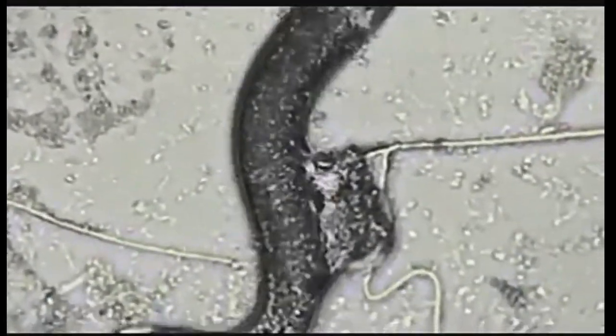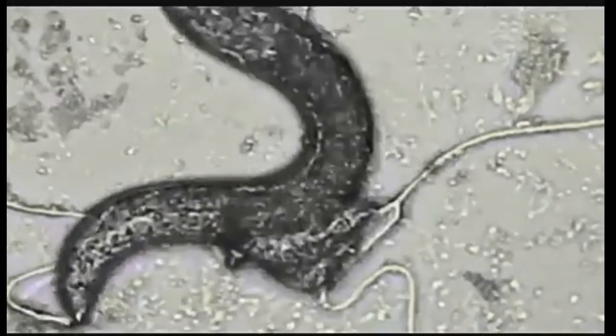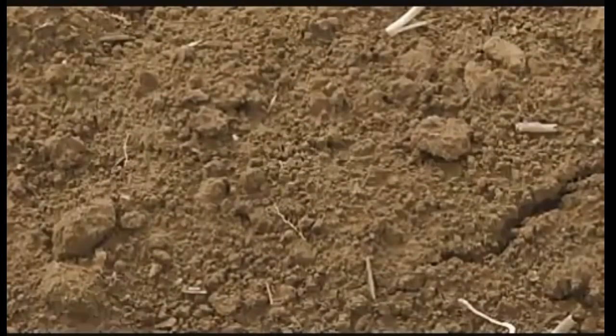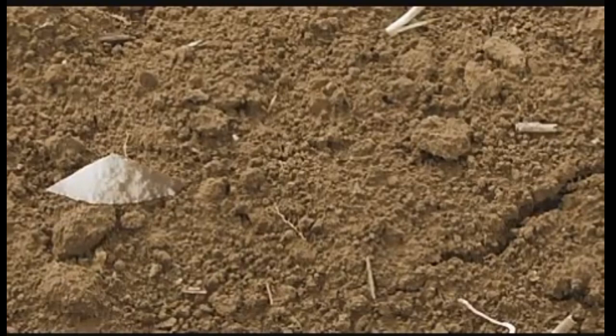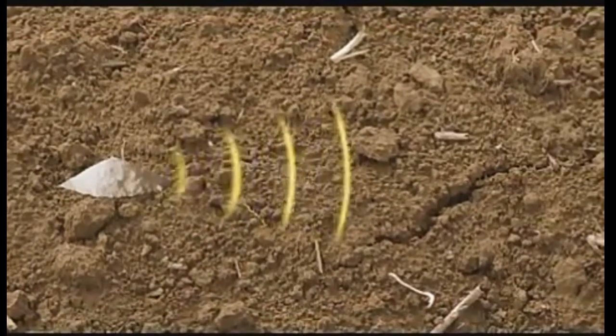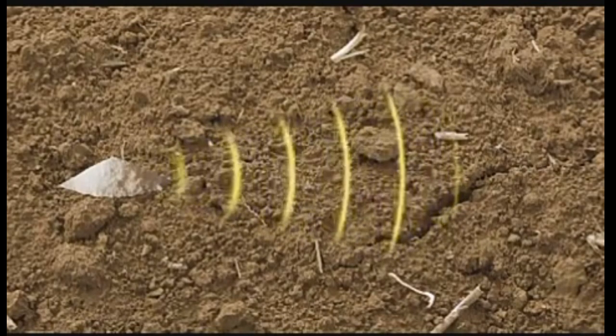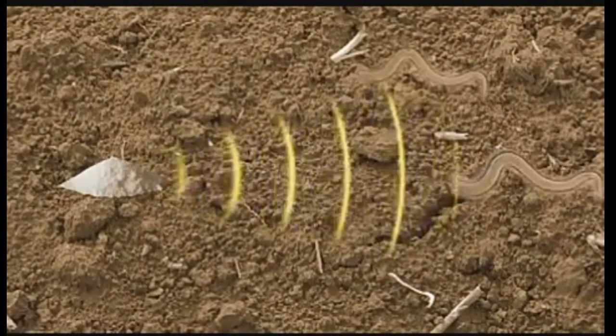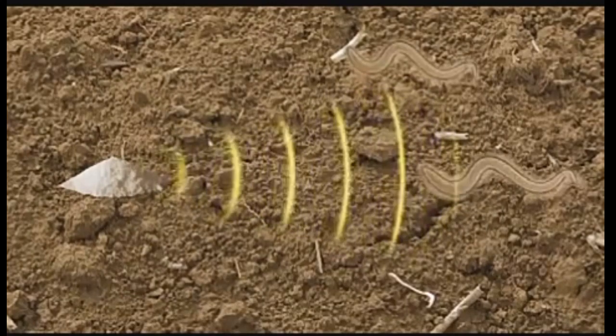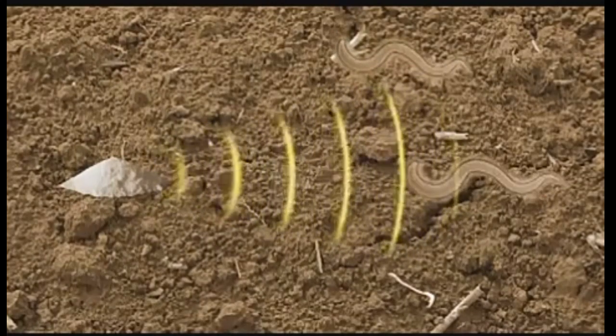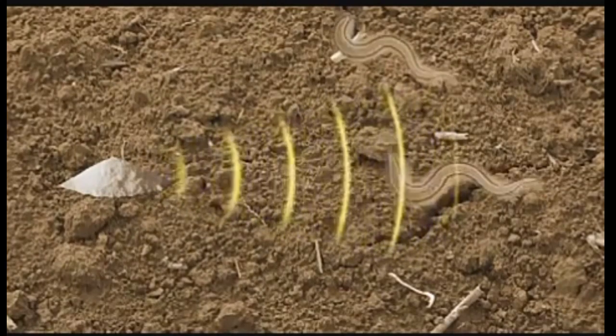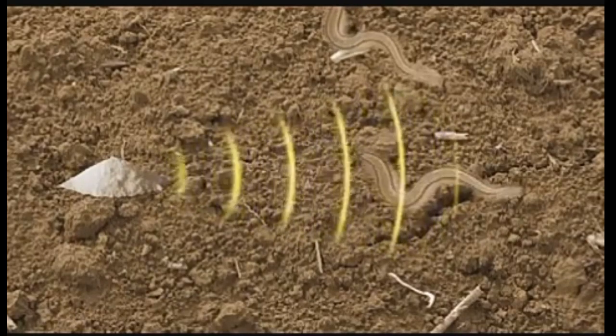Not so complex, is it? In fact, even these roundworms can do calculus. Wondering how that works? Take this particle of food. The intensity of the smell reduces as you move away from it. Now from each position, the roundworm calculates the rate of change of strength of the smell and decides its path forward or otherwise. This is equivalent to taking a derivative in calculus.